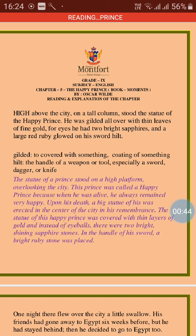Let us start reading the text of the chapter. 'High above the city, on a tall column, stood the statue of the Happy Prince. He was gilded all over with thin leaves of fine gold; for eyes he had two bright sapphires, and a large red ruby glowed on his sword hilt.' In the first paragraph, we can see that the prince has died and his statue has been established on a high platform, but the statue is decorated with beautiful ornaments.